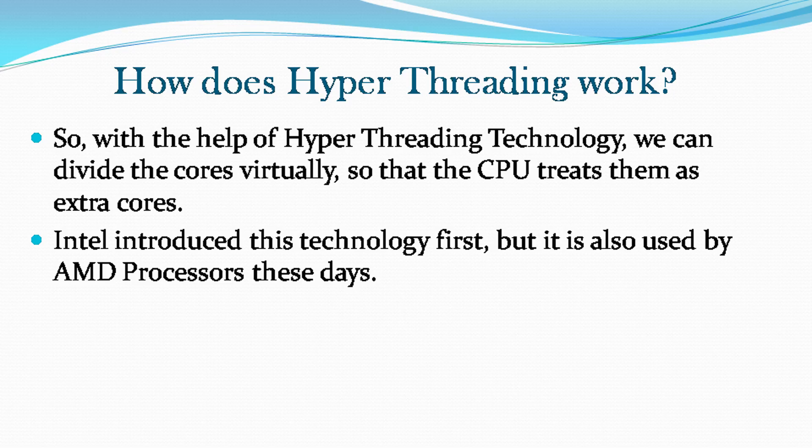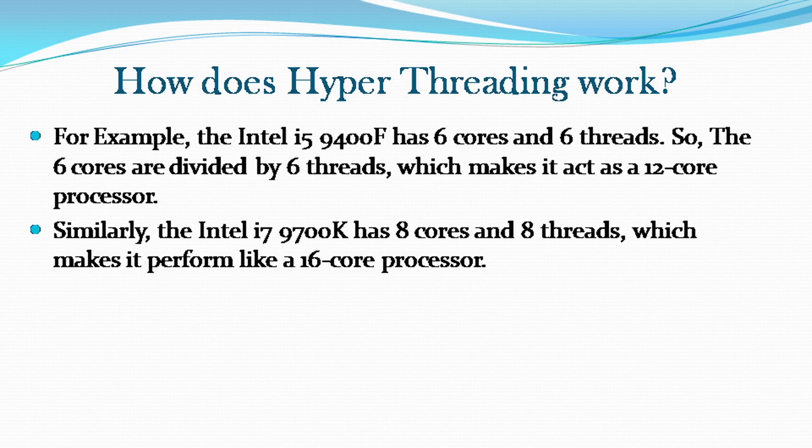Intel introduced this technology first, but it is also used by AMD processors these days. For example, the Intel i5-9400F has 6 cores and 6 threads, so the 6 cores are divided by 6 threads, which makes it act as a 12-core processor. Similarly, the Intel i7-9700K has 8 cores and 8 threads, which makes it perform like a 16-core processor.